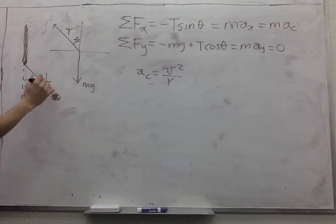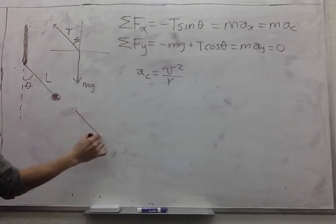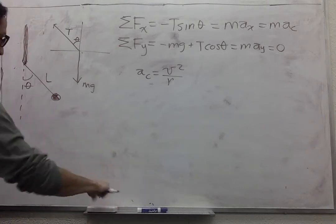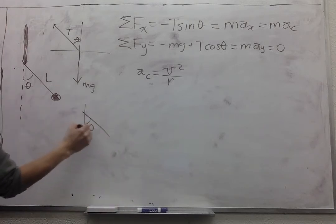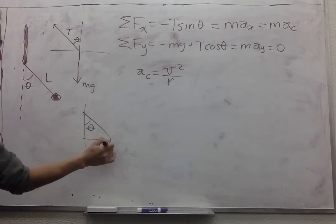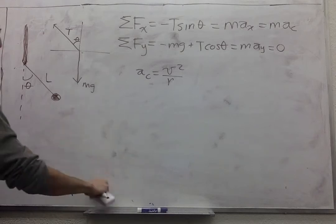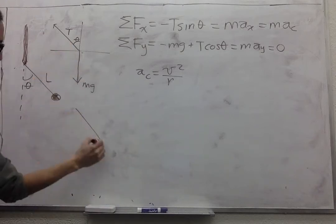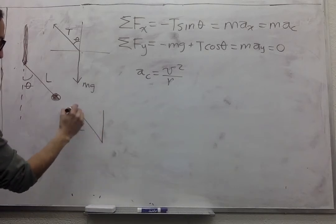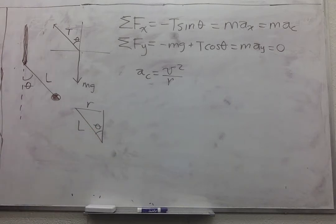In this case, R is related to L. We have this triangle. So R will be this one. It looks a little weird. So it's better if we do it over here. We have L and this is R and this is theta. So R is equal to L sin theta.